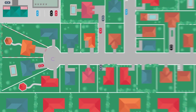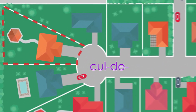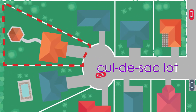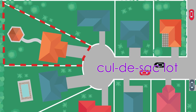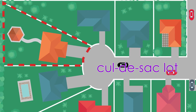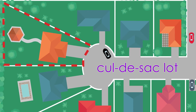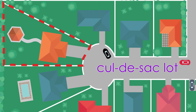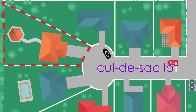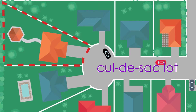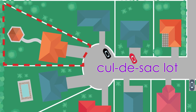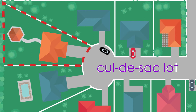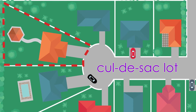Lot types include the cul-de-sac lot — a lot facing the rounded turnaround portion of a dead-end street. Cul-de-sac property is private since it is not subject to through traffic. Unlike rectangular lots, the cul-de-sac lot has a small front yard, which is offset by a larger backyard.